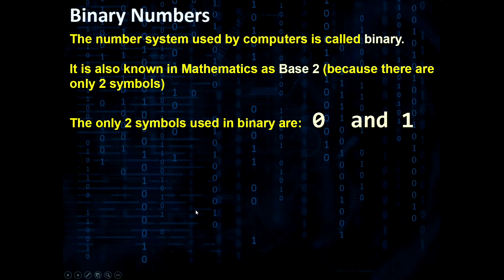Now let's take a look at binary numbers. The number system used by computers is called binary. In mathematics it's called base 2 because there are only two symbols for making numbers, 0 and 1.